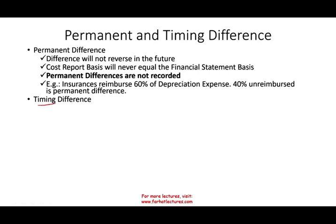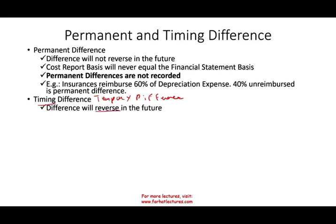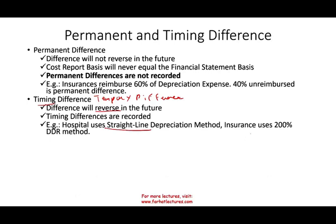Timing differences — as I mentioned — are the same as temporary differences. If you are studying about those differences, temporary and permanent, you could always go to my intermediate accounting course where I have a full lesson on timing and temporary as well as permanent differences. But here we're talking about the cost report. Timing differences differ, but in the future they would reverse. Timing differences are recorded because they are going to reverse. An example would be the hospital using the straight-line depreciation method while the insurance company uses the 200% double declining rate.